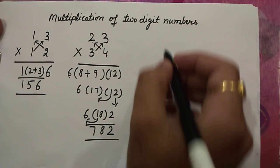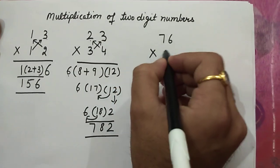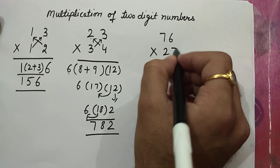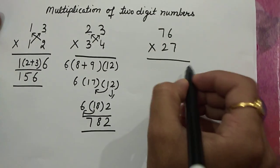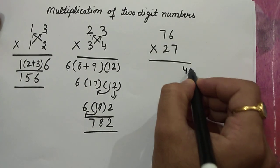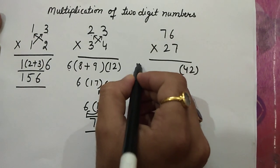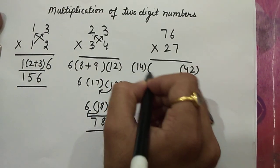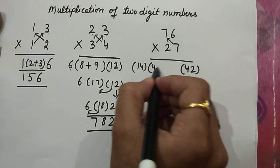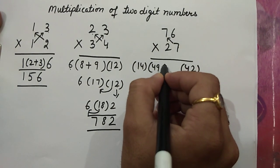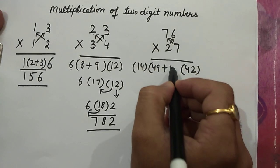Let's take one more example: 76 multiply 27. 7 times 6 are 42. 7 times 2 are 14. Then 7 multiply 7 we get 49. And 6 into 2, we get 12.